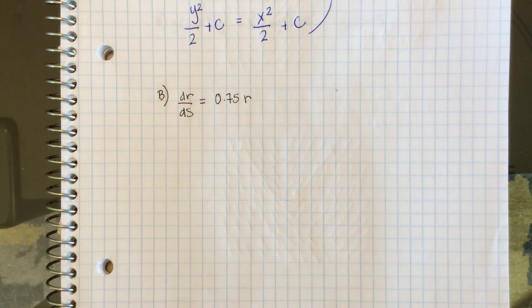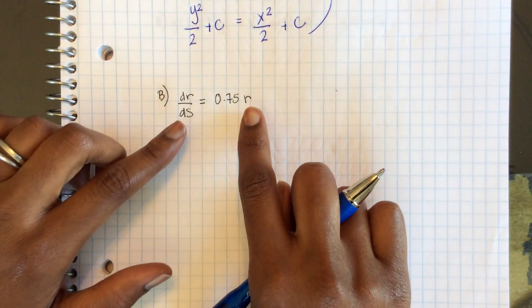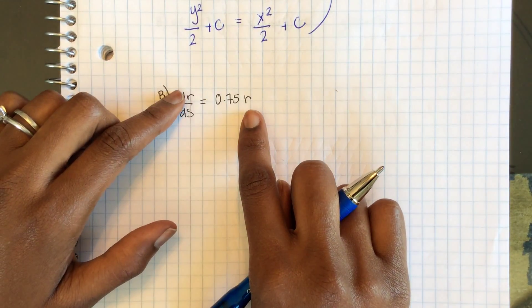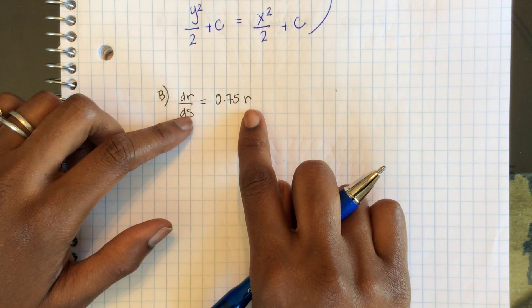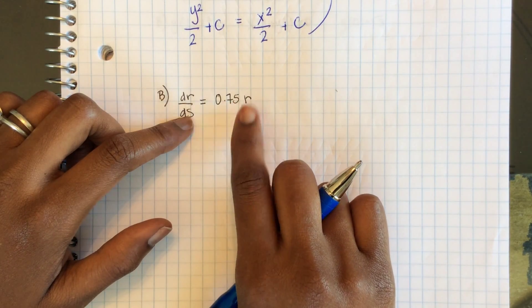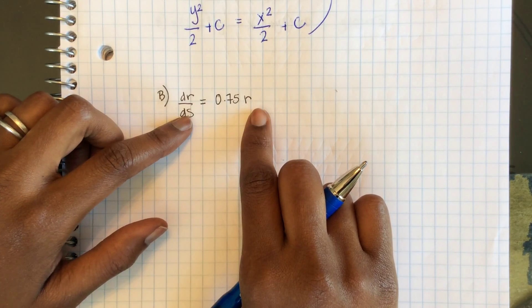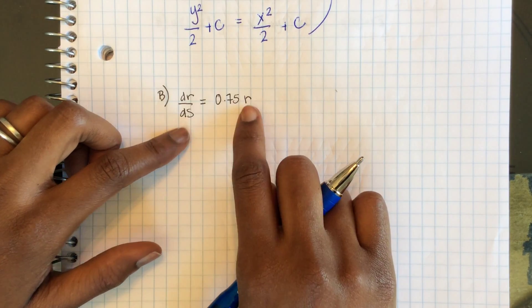Hi guys, welcome back to 6.3 example 1. Now we're into part B. Once again, we have dr/ds, which is a differential equation in terms of r and s, equals 0.75r. So I need to separate my variables.